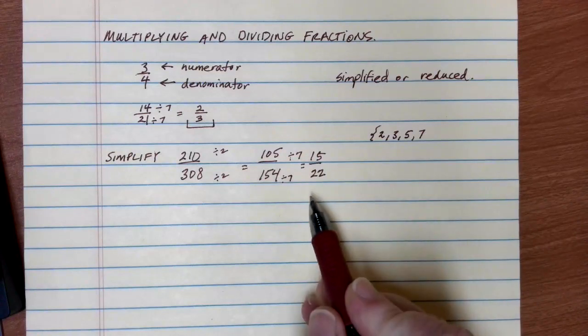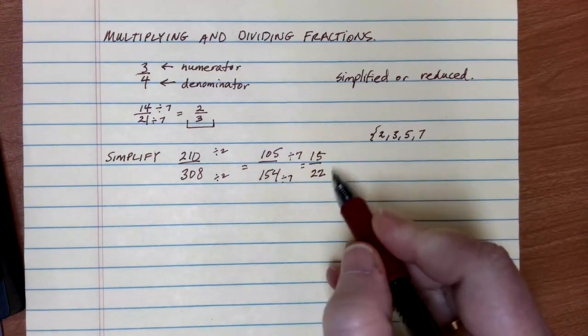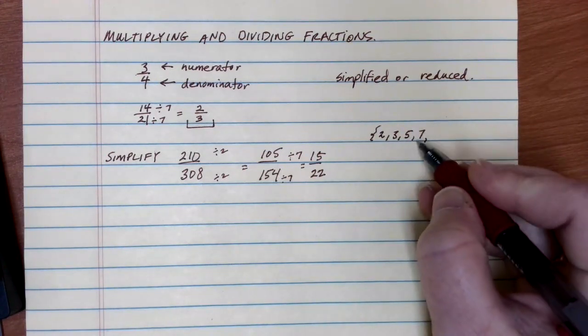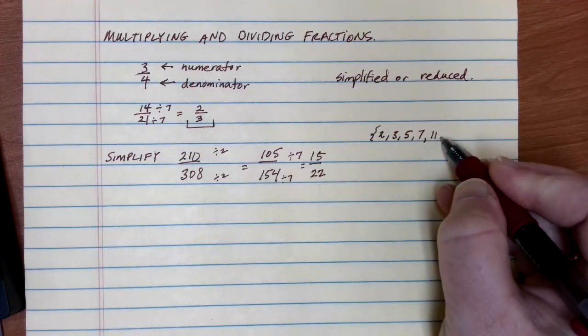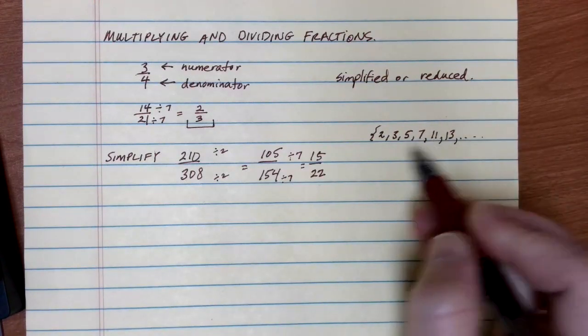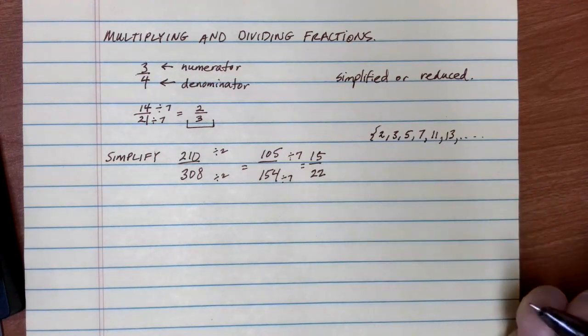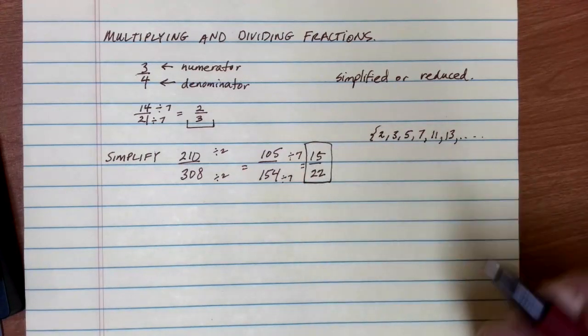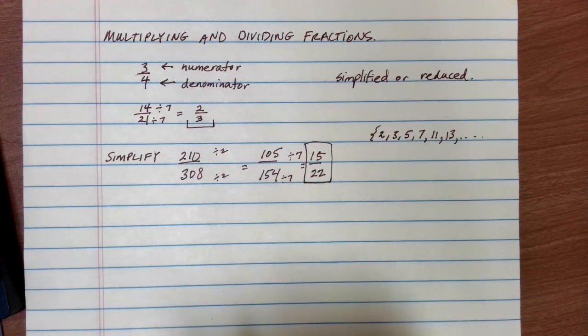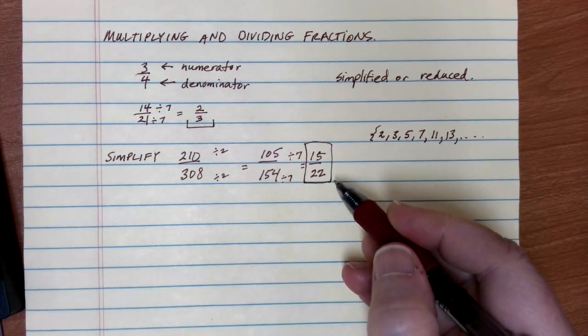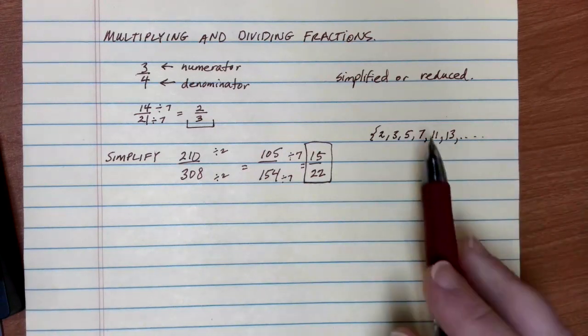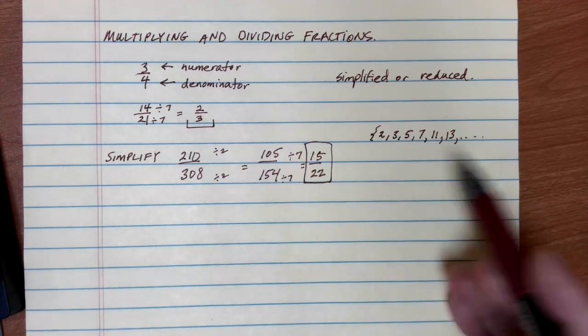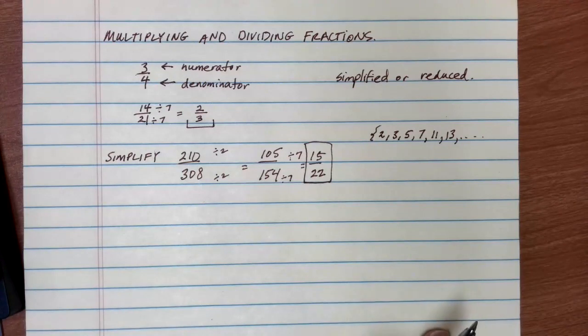So as I look at this final solution, I can still try a couple of other prime numbers. Notice after seven, the next prime number is 11, then 13, and so on. But 11 is way too big to go into 15, so I'm as simplified as I possibly can get. 15 is three times five, 22 is two times 11, and there's nothing else that will go into both of those. So if you get stuck, I just methodically go through each of these, checking to see if the numbers go in evenly.